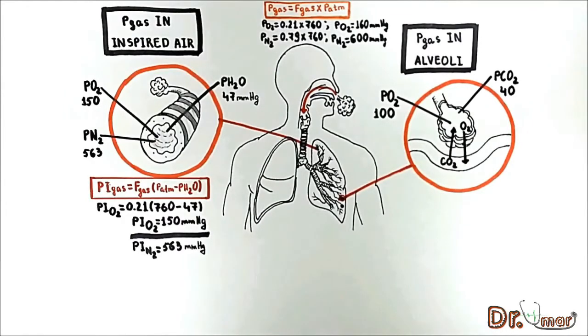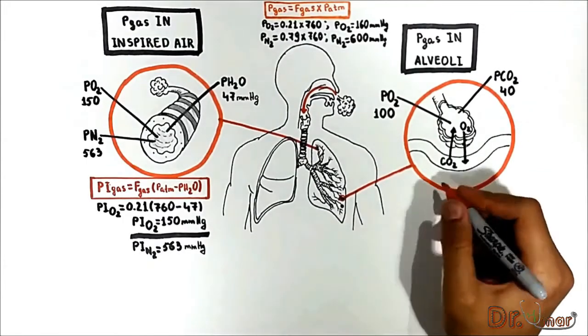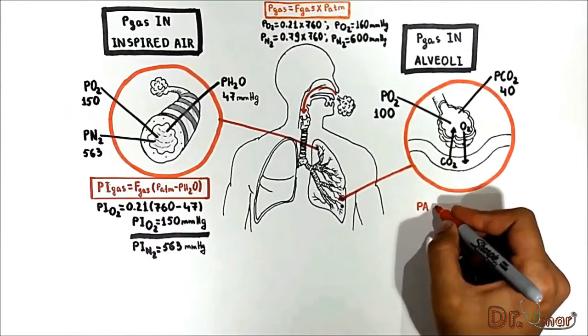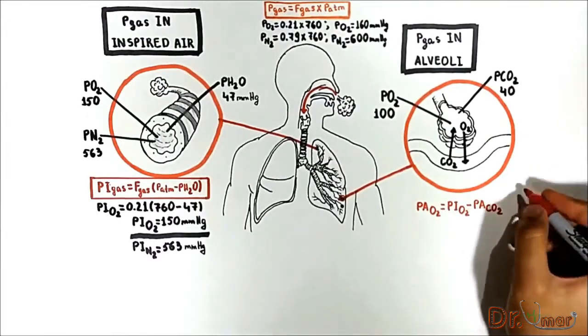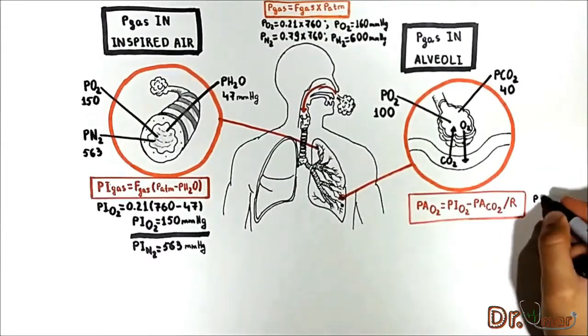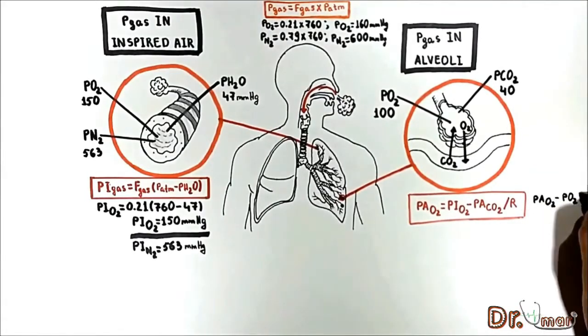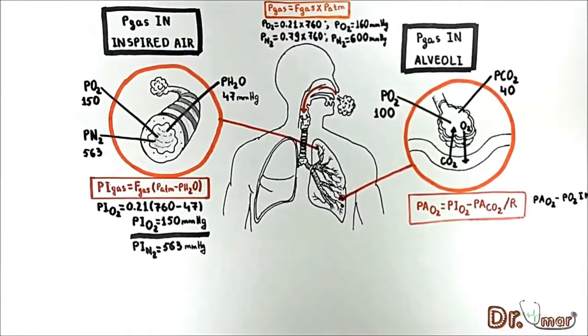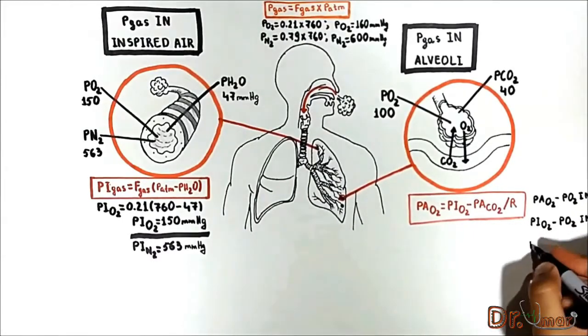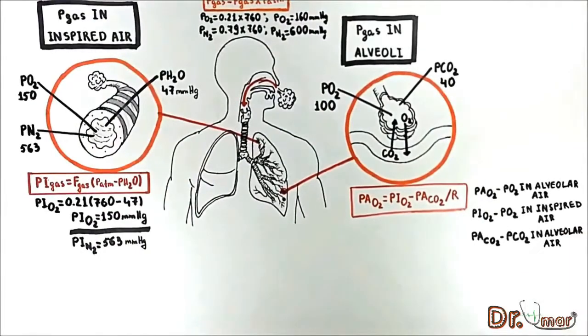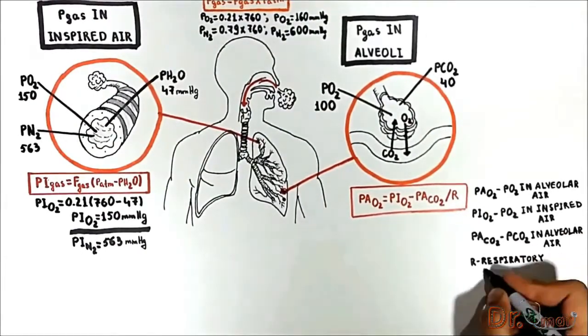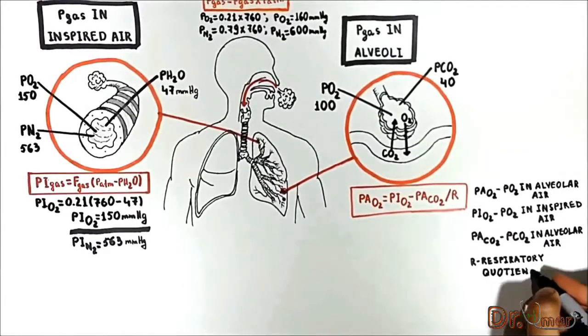The relationship between partial pressure of oxygen and carbon dioxide in alveolar air is described by the important alveolar gas equation. P-alveolar O2 equals P-inspired O2 minus P-alveolar CO2 divided by R. Where PaO2 and PiO2 are the partial pressures of oxygen in alveolar air and in inspired air respectively, PaCO2 is partial pressure of carbon dioxide in alveolar air, and R is the respiratory quotient which usually has a value of 0.8.